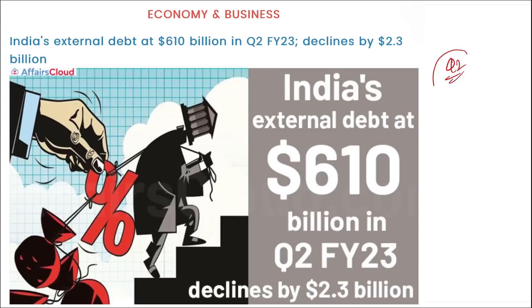2nd quarter में India का external debt था 610 billion dollar का। अगर मैं first quarter की बात करूँ तो total India का external depth था 612.3 billion dollar का। तो हम देखेंगे यहां पर जो reduction आया।